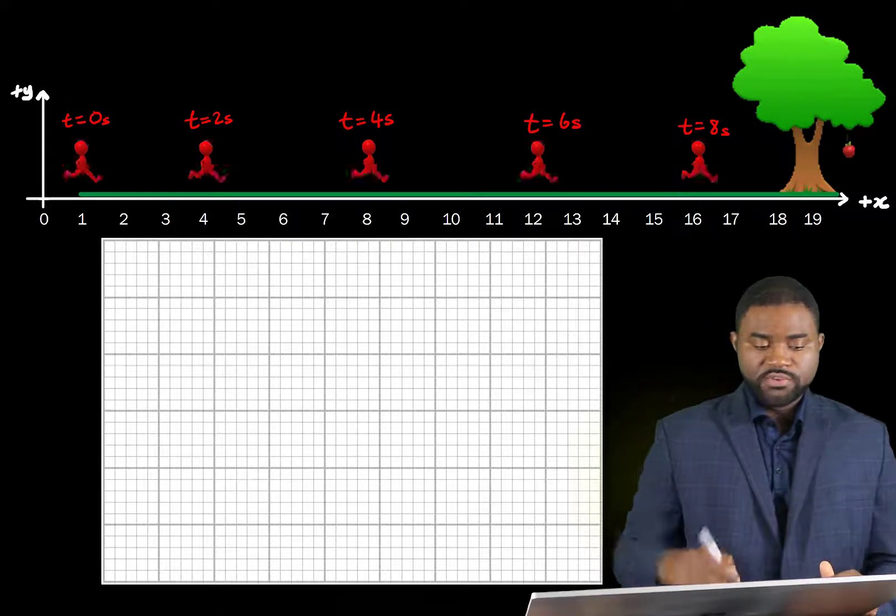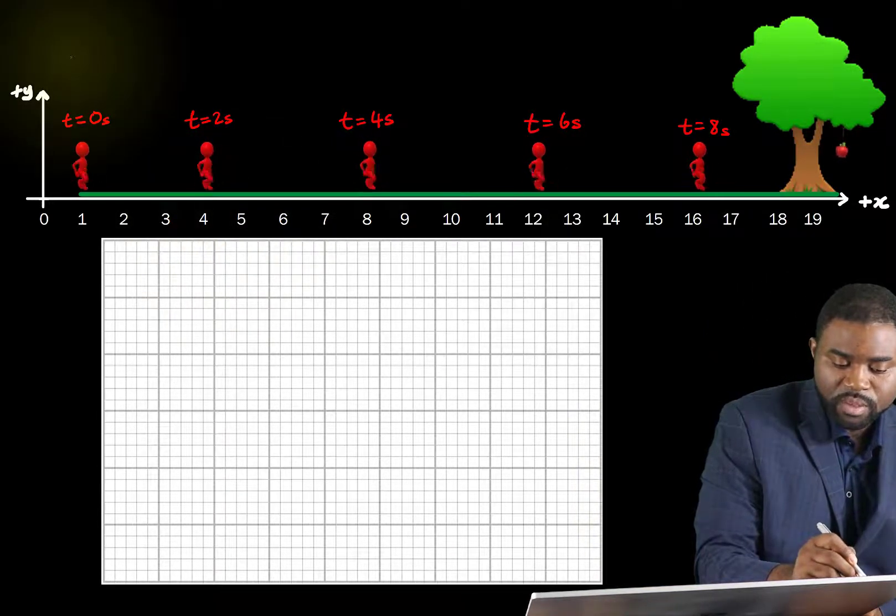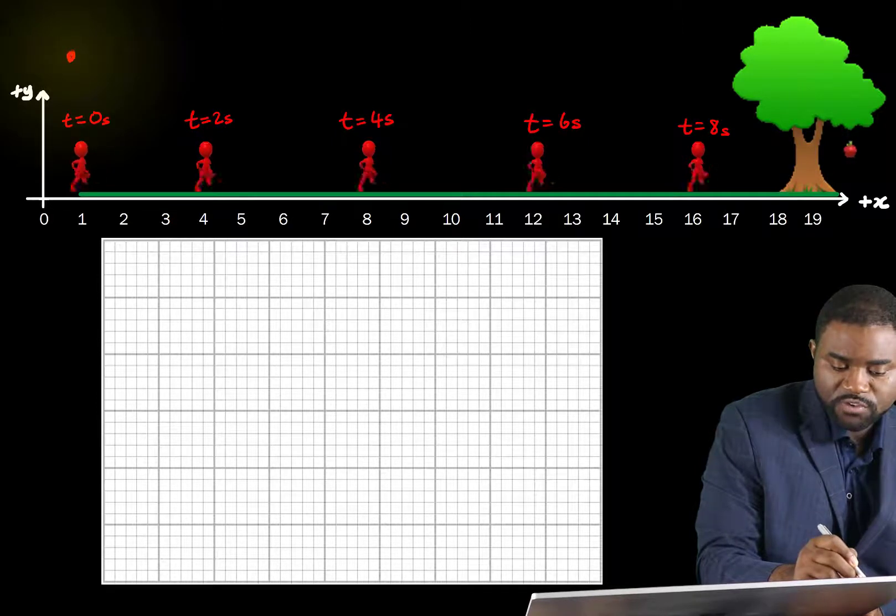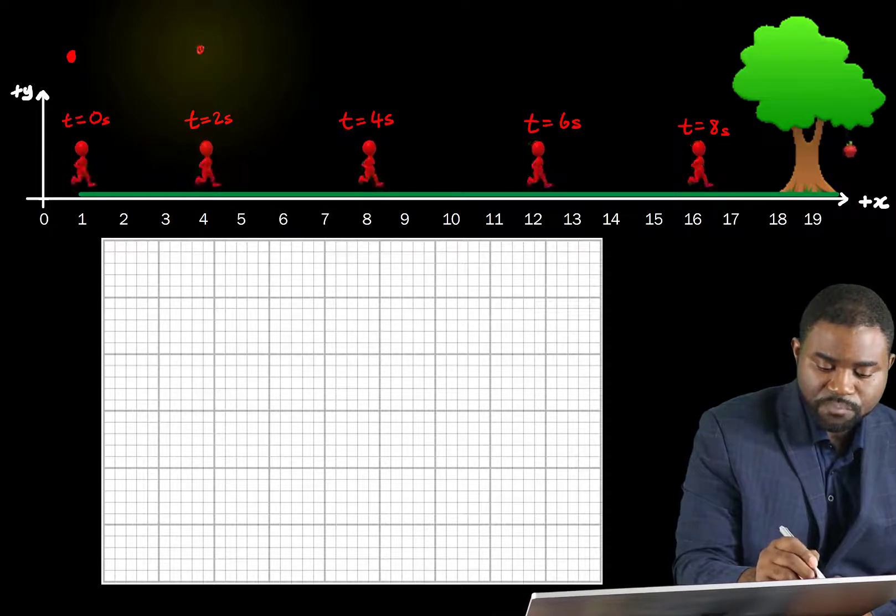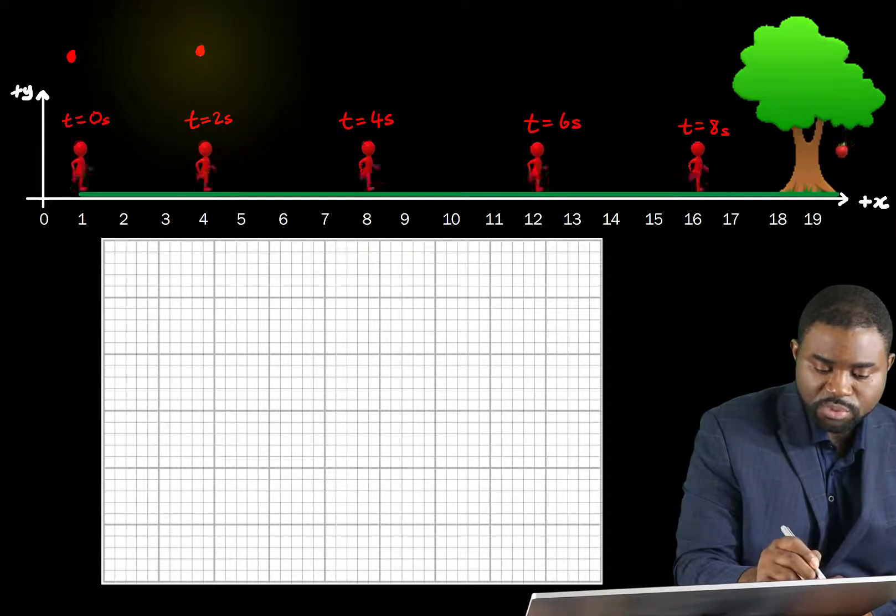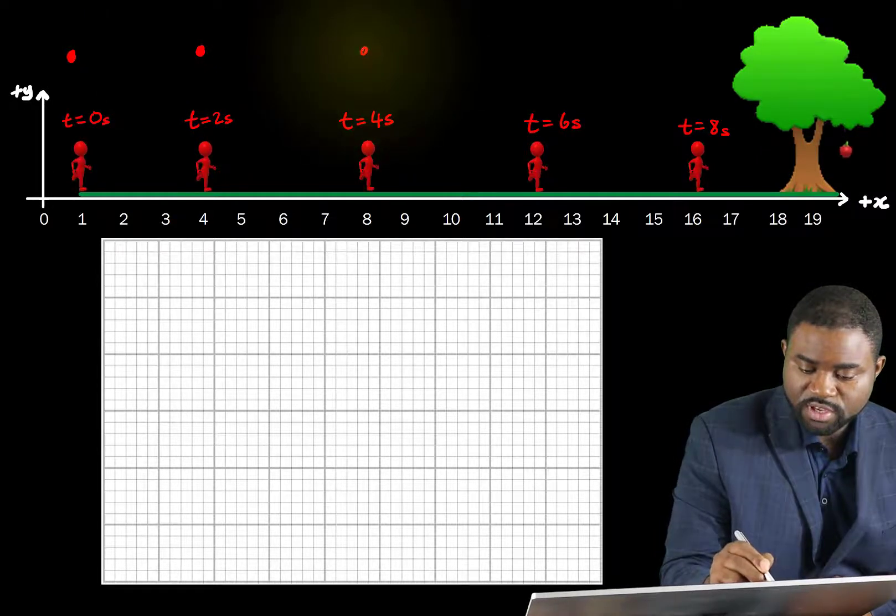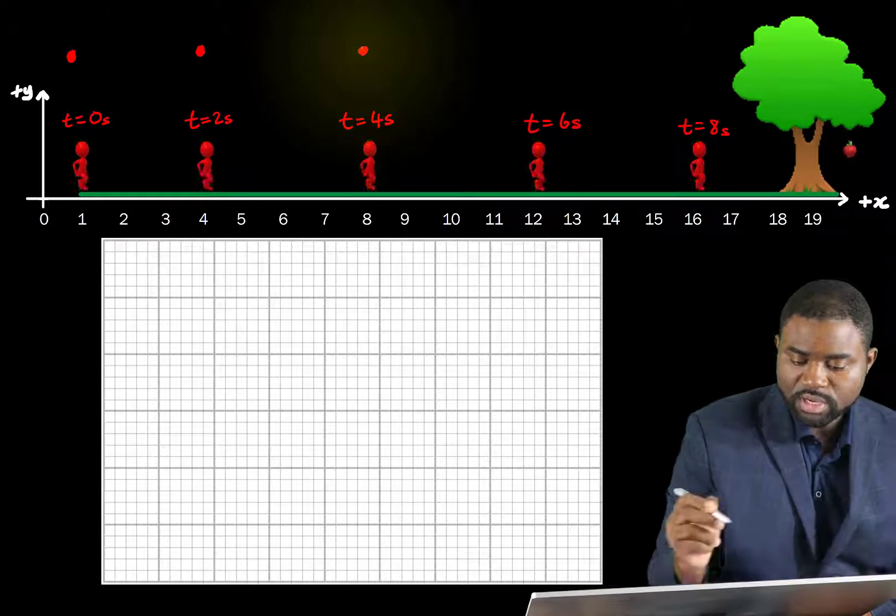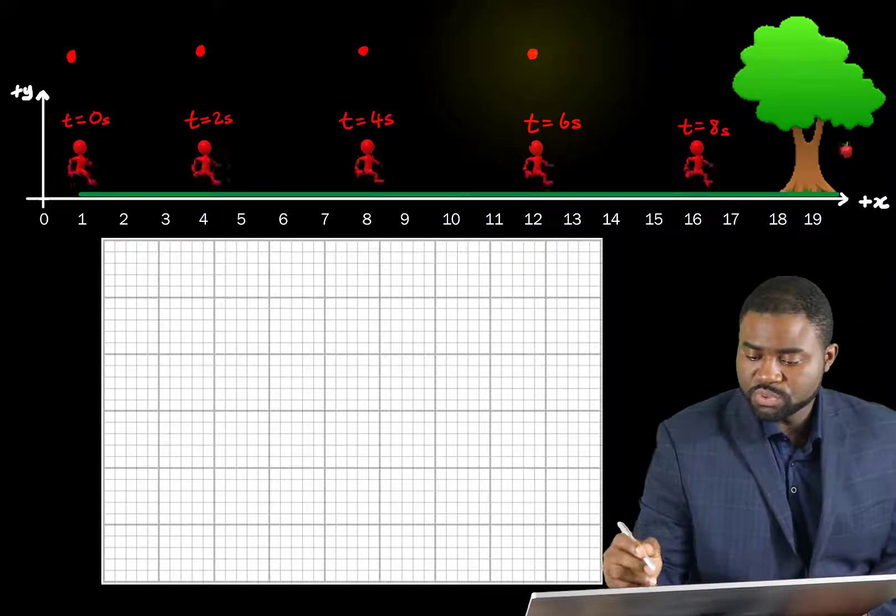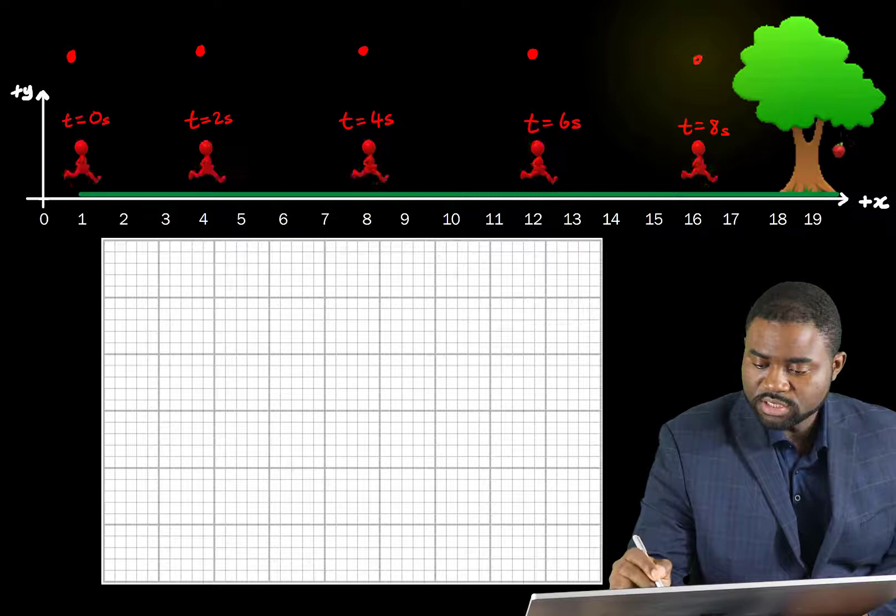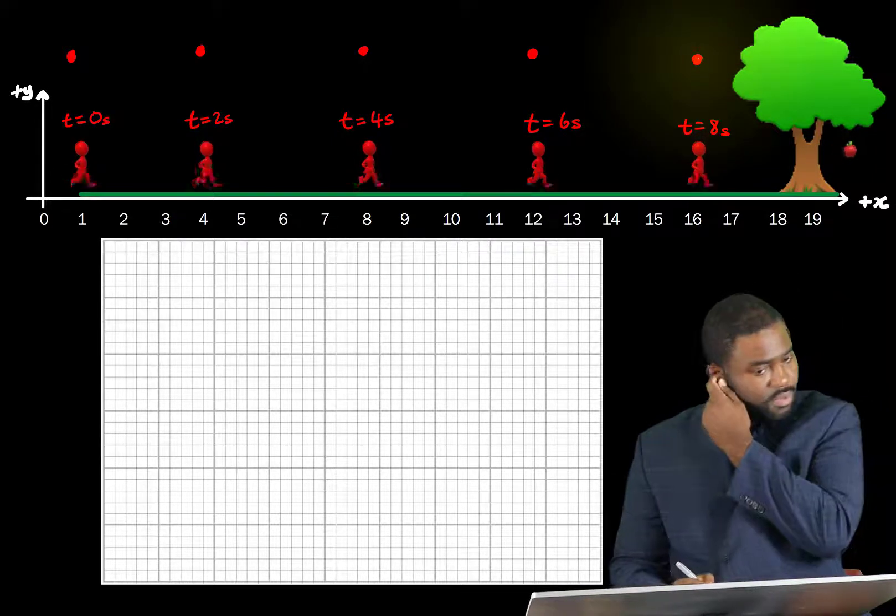So what we can do is, this is his position at t equal to zero. This is his position at t equal to two. This is his position at t equal to four. This is his position at t equal to 12, and this is his position at t equal to 16.